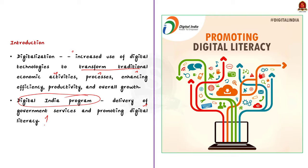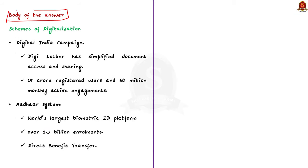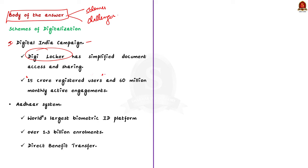We are going to divide the body part into two parts. In the first part, we explain the steps for digitalization in India; in the second part, we explore the problems. First, the Digital India Campaign has empowered citizens through digital technologies. For example, DigiLocker has simplified document access and sharing, contributing to greater digital inclusion — it has over 15 crore registered users and 60 million monthly active engagements. Access to this information is crucial for making informed decisions that can lead to socio-economic upliftment.